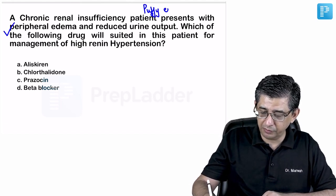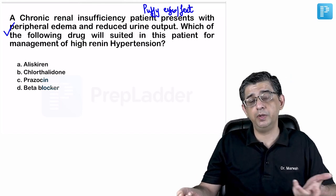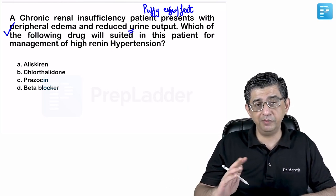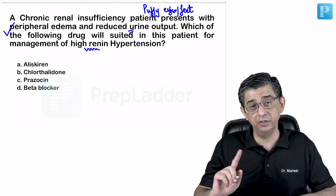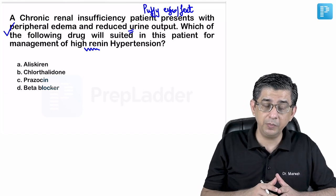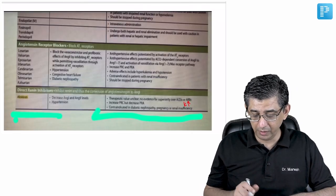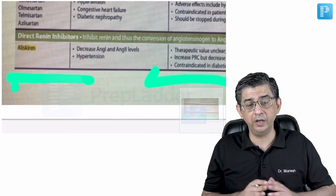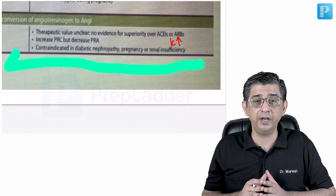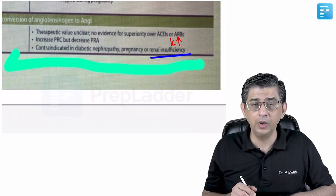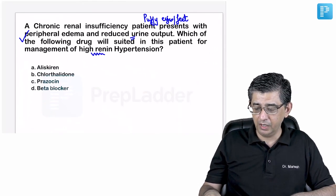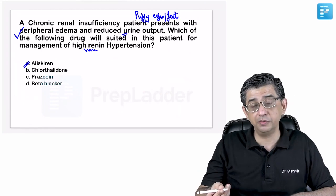Next: a CKD patient with peripheral edema and oliguria. The question asks about management of high renin hypertension — a deliberate ploy to make us think of aliskiren (direct renin inhibitor). However, aliskiren is contraindicated in diabetic nephropathy and renal insufficiency due to risk of hyperkalemia. Per Goodman & Gilman, aliskiren is not recommended in patients with renal insufficiency, making option A (aliskiren) incorrect despite appearing attractive.